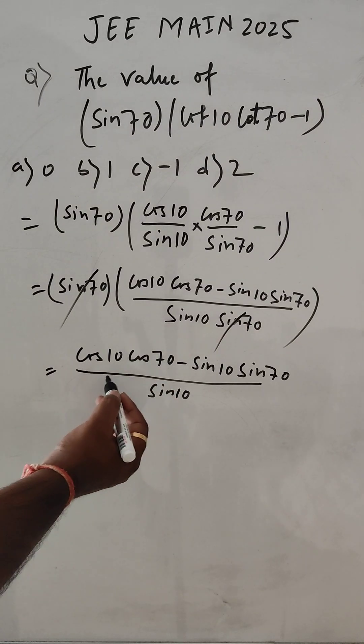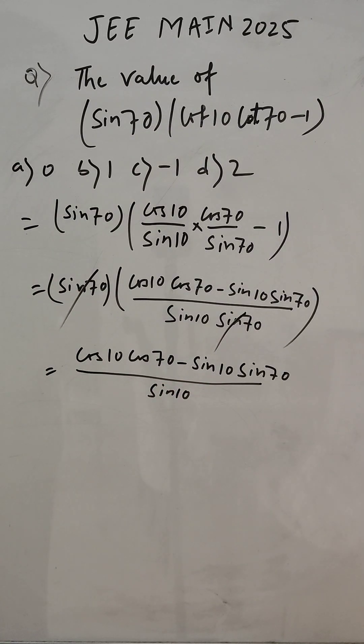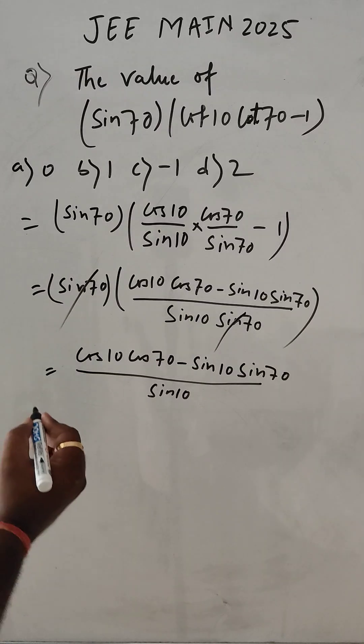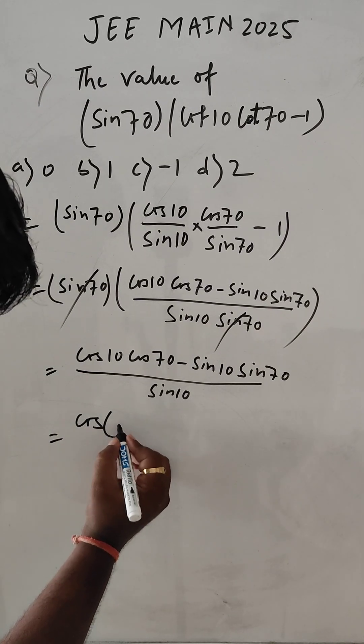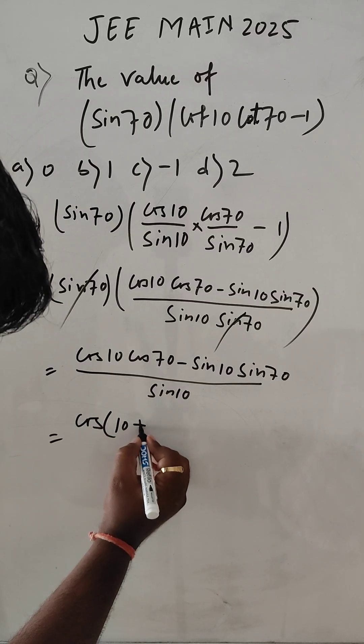This is nothing but cos A plus B formula. So we can write here cos 10 plus 70.